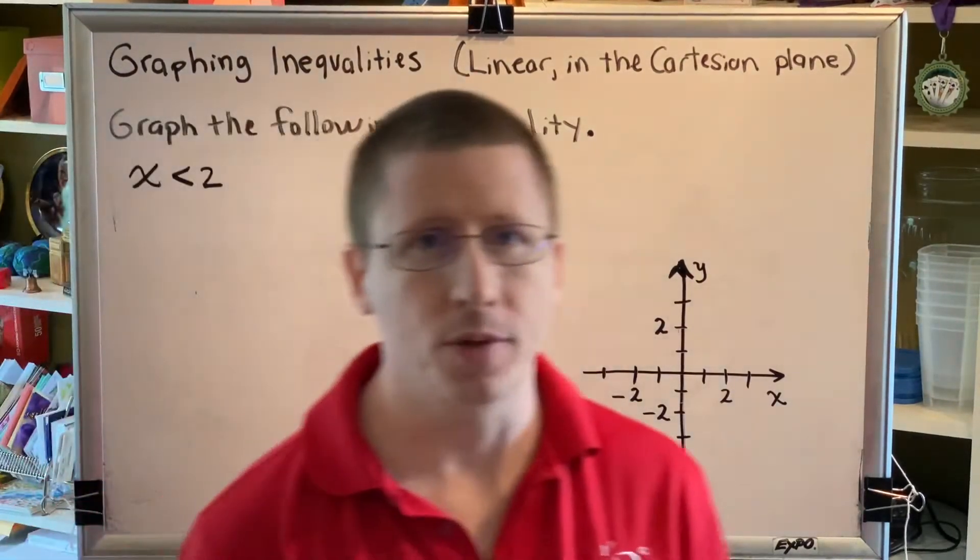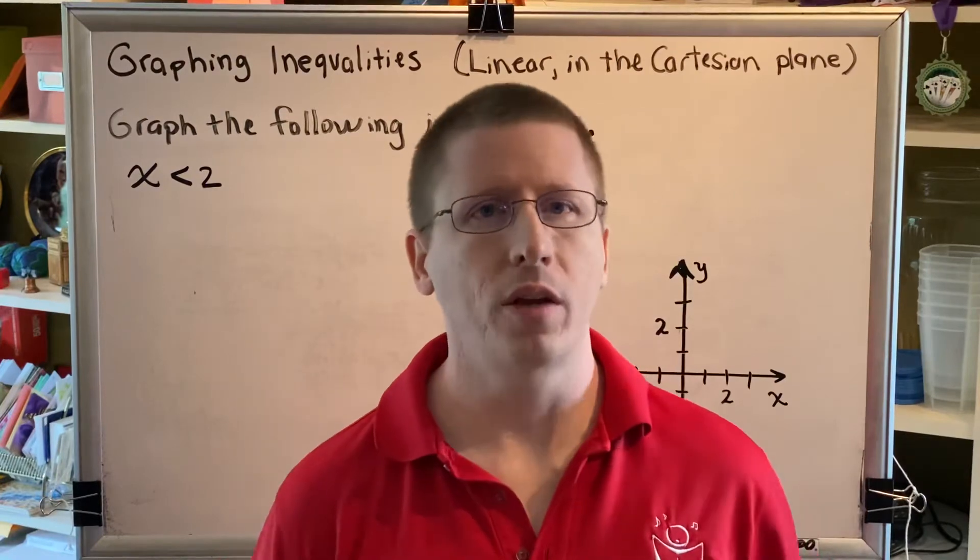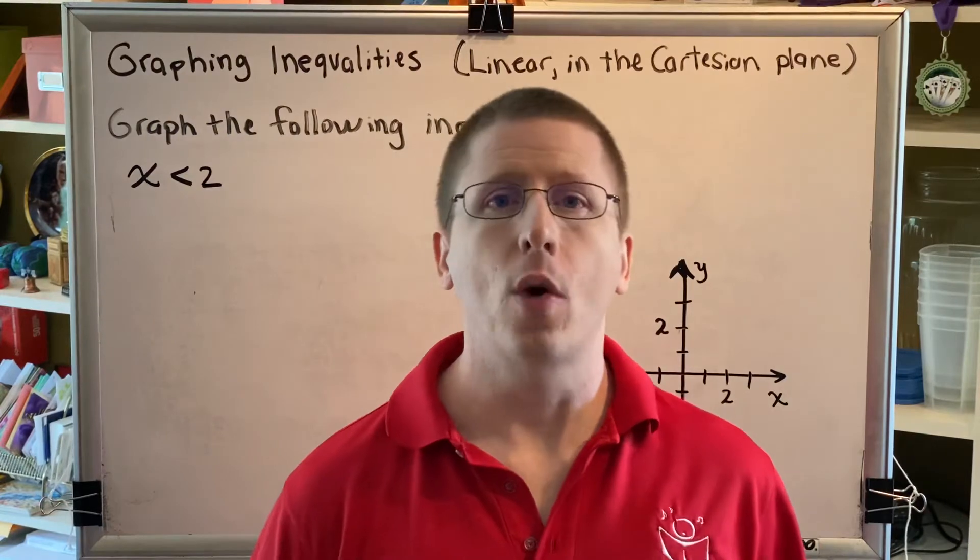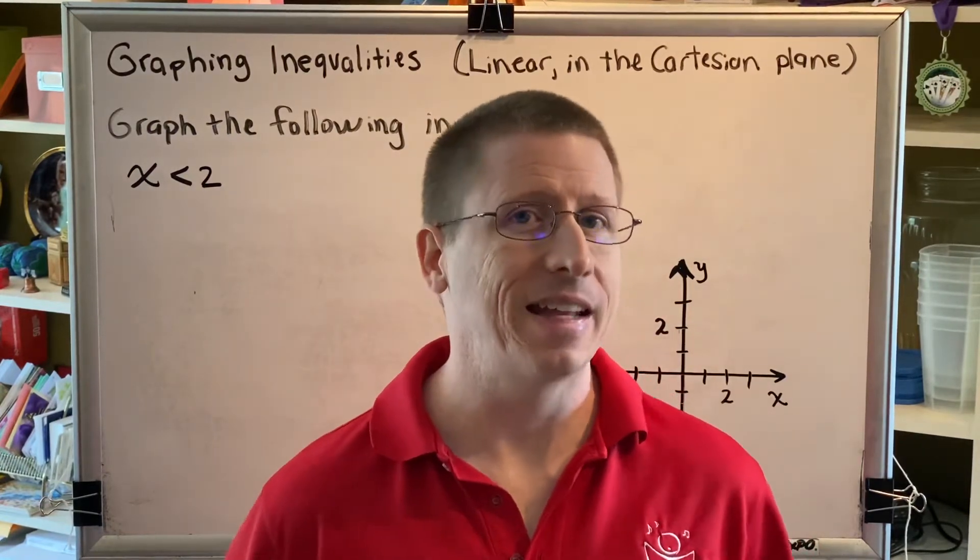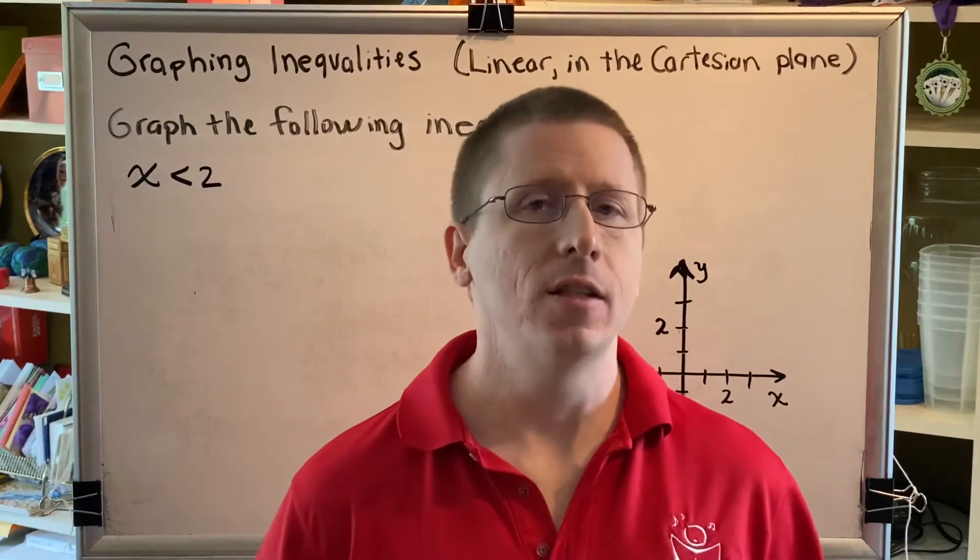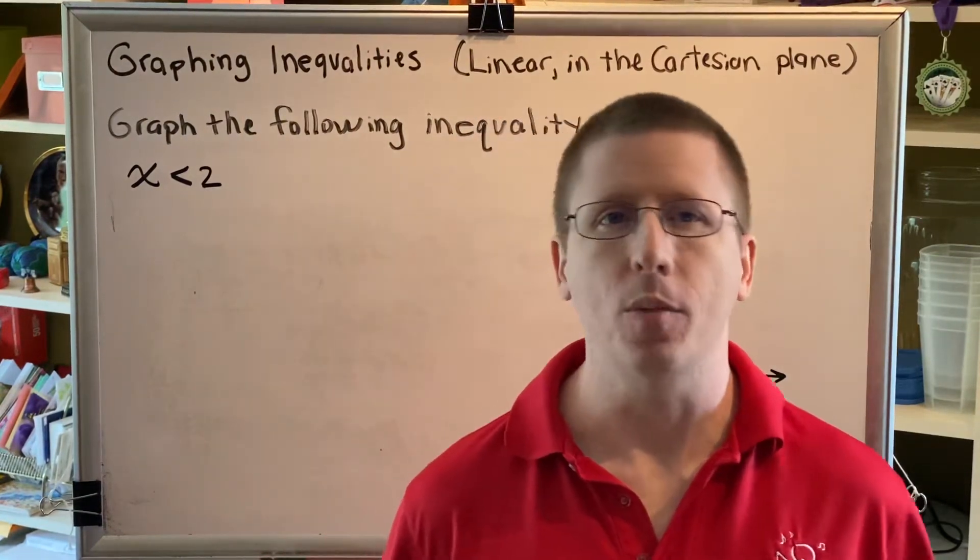Let's go through the three steps. Step 1, solve the inequality for y, if possible. If not, solve it for x. Step 2, graph the line pretending that it says equals. Step 3, shade on one side of the line depending on the inequality symbol and the variable that you solved for.